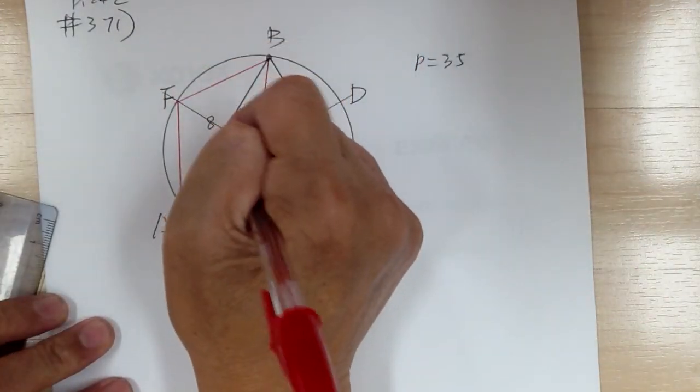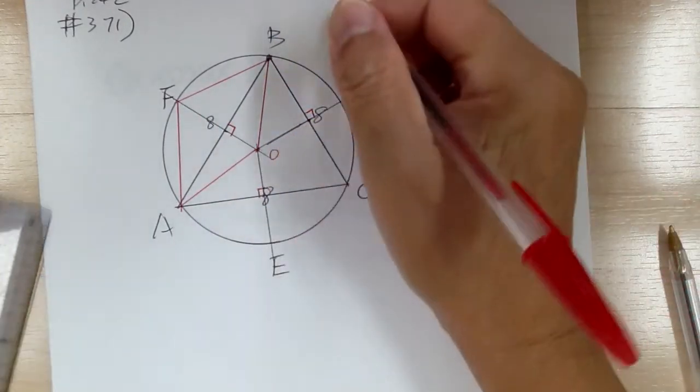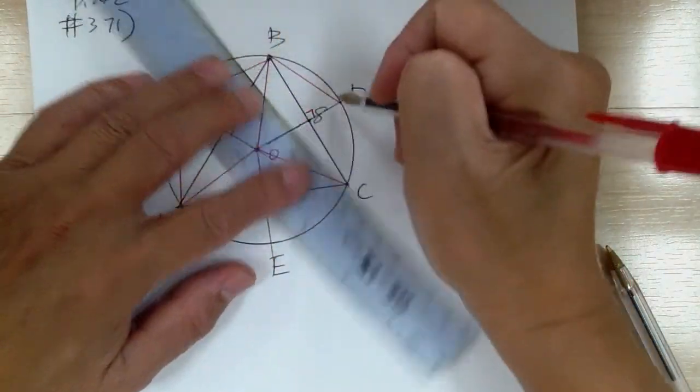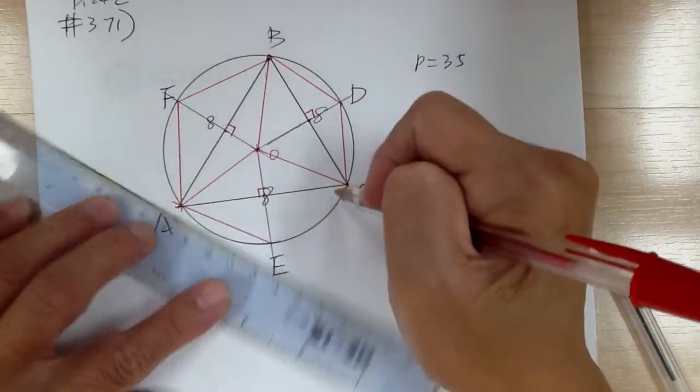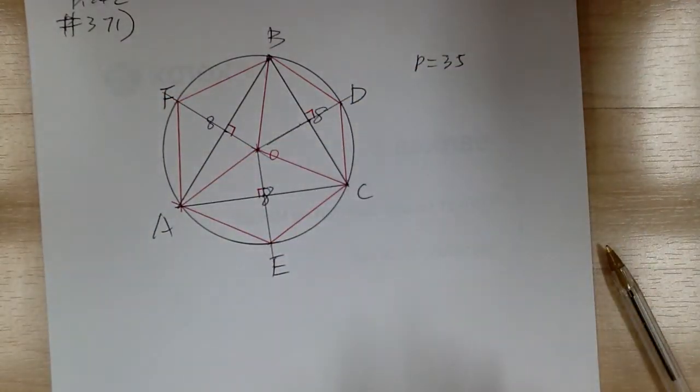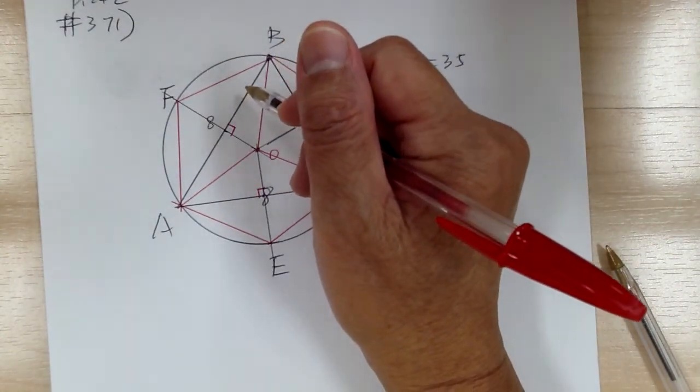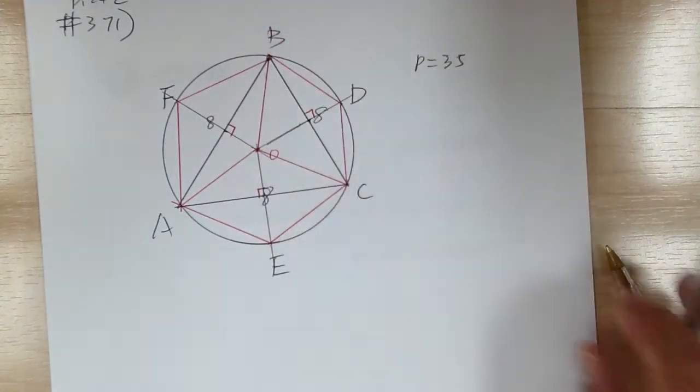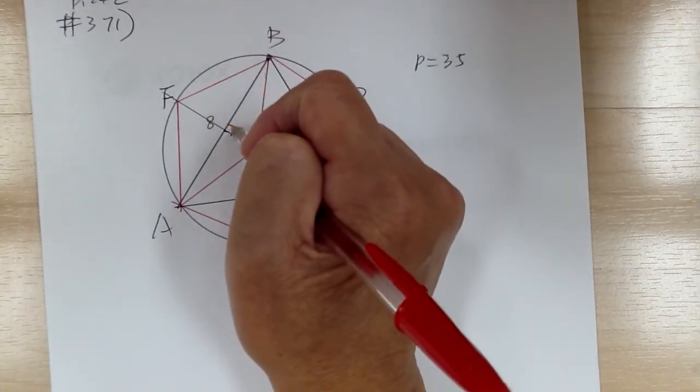Now this is a perpendicular bisector, so this would be a right angle. So basically you divide this hexagon into three quadrilaterals. If you just take this one here, since the diagonals are perpendicular, the area will be one-half d1 times d2.